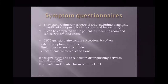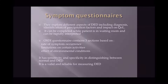Symptom questionnaires are very important, exploring different aspects of dry eye disease including diagnosis, identification of precipitating factors, and impact on quality of life. They can be completed in the waiting room and rapidly interpreted by the physician. The most popular is the Ocular Surface Disease Index (OSDI) questionnaire, which contains three sections based on symptom occurrence rate, limitation of certain activities, and effect of environmental conditions. It has high sensitivity and specificity in distinguishing between normal and dry eye disease.